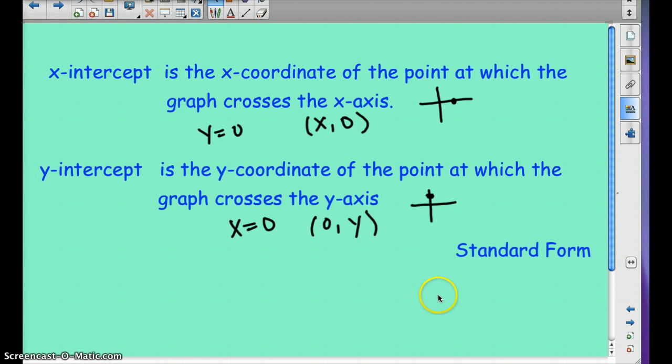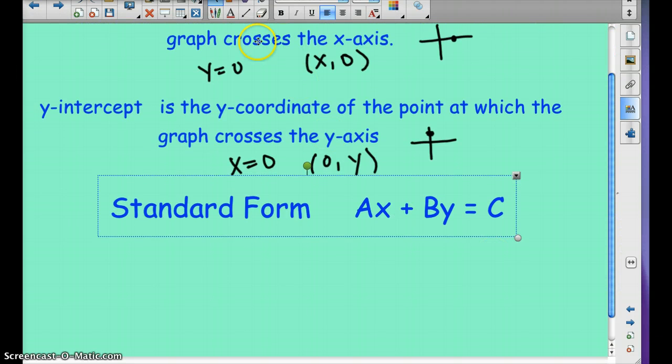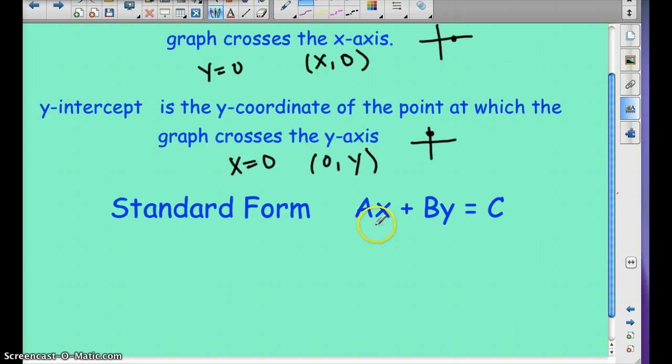Now, one way that's easy to find the x and y-intercepts is to put your equation or your function in standard form. So standard form is ax plus by equals c. Where a, b, and c, they're all whole numbers. And a has to be, the leading coefficient has to be positive. So if you notice, x and y are on the same side as well. So that's just one easy way to find the x and y-intercepts. It's up to you if you want to use standard form. I'm not going to make you use it. But if you want to use it to find the x and y-intercepts, you can.